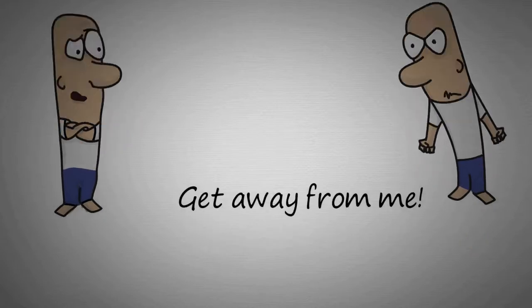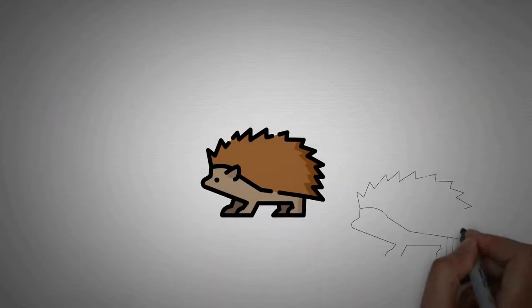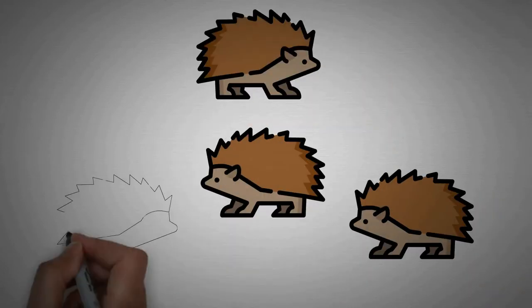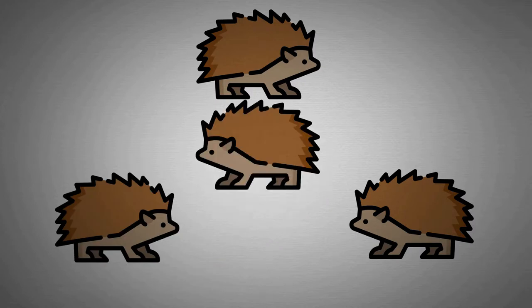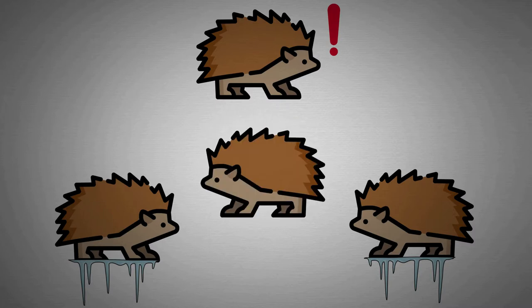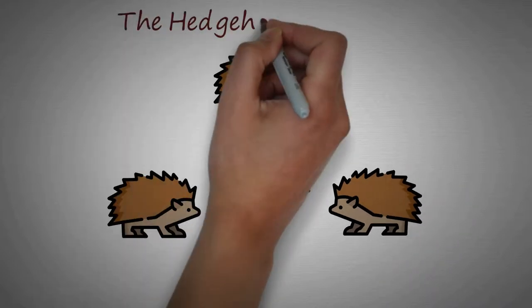This situation can be illustrated with a little animal called Hedgehog. Several hedgehogs want to stick together for sharing heat in winter. When they get closer, the spines on them will hurt each other. But when they are too far from each other, they cannot share heat. In this situation, they should find out a certain distance to share warmth and avoid hurting each other. This is called Hedgehog's Dilemma.